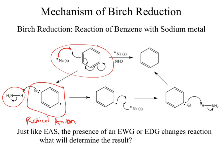You are not responsible for the mechanism. What you are responsible for is that this reagent works. This will only happen when you take an aromatic ring with sodium metal — these are the reagents you have to use for the Birch reduction. You cannot do it any other way.